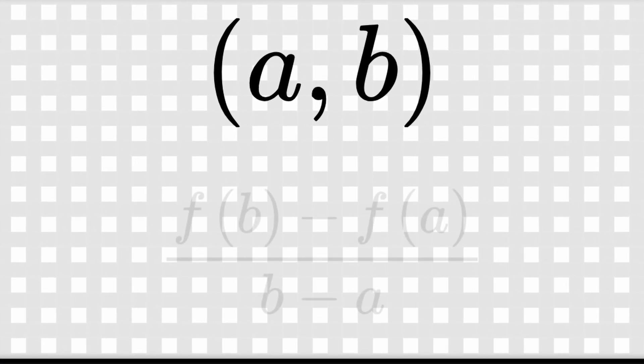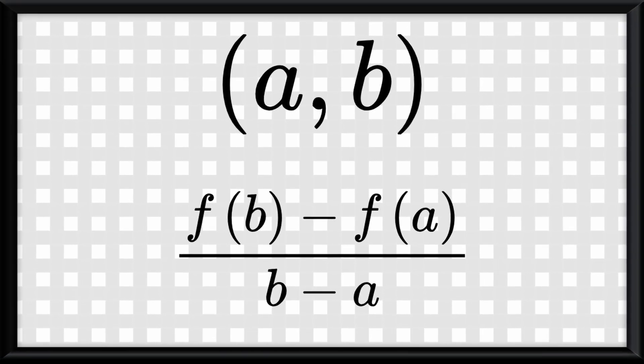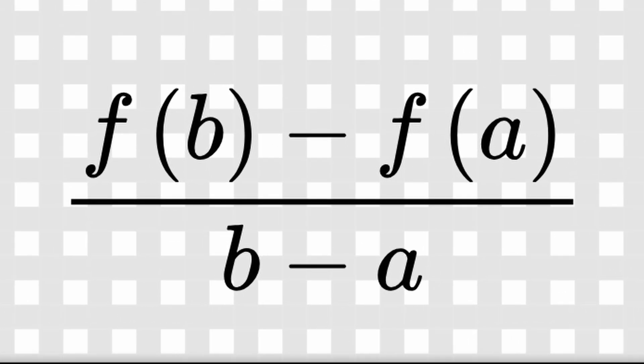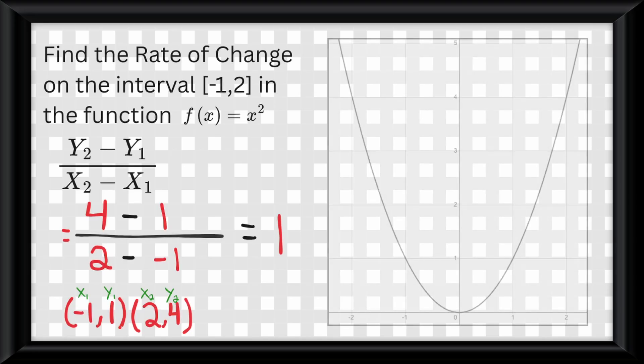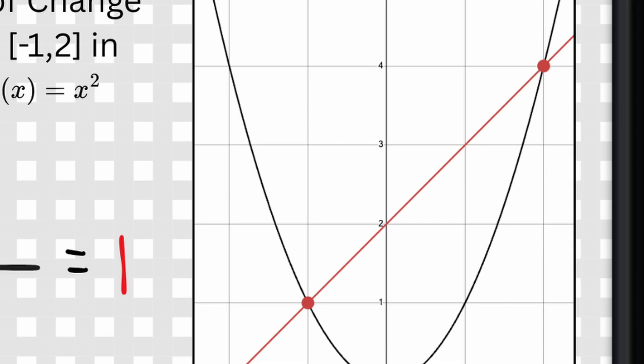Now let's call the interval we are finding the rate of change on A to B. So now the formula turns into f of B minus f of A over B minus A. So if you're finding rate of change over an interval, this is the formula you use, period. A reminder that when you do find the average rate of change over an interval, you're simply finding the slope of the secant line created in that interval between those two points.